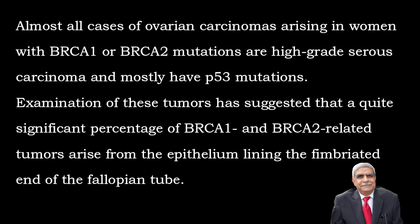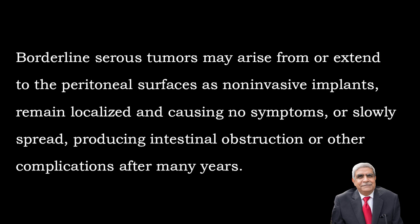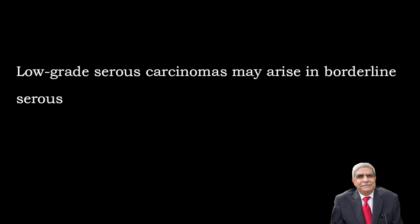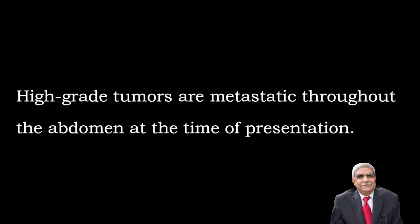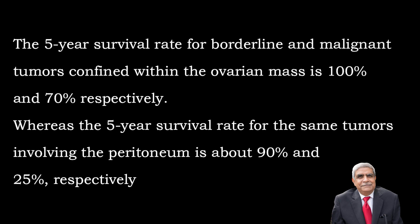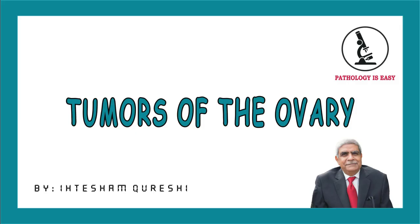Regarding prognosis: borderline serous tumors may arise from or extend to the peritoneal surface as non-invasive implants, remaining localized with no symptoms or slowly spreading to cause intestinal obstruction, with complications arising after many years. Low-grade carcinomas arising in borderline serous tumors are referred to as invasive implants due to their destructive infiltrative growth similar to metastatic carcinoma, though their progression is slow. High-grade tumors are often widely metastatic throughout the abdomen at presentation. The five-year survival rate for borderline and malignant tumors confined within the ovary ranges from 100% to 70% respectively, whereas for the same tumors involving the peritoneum it is about 90% and 25% respectively.